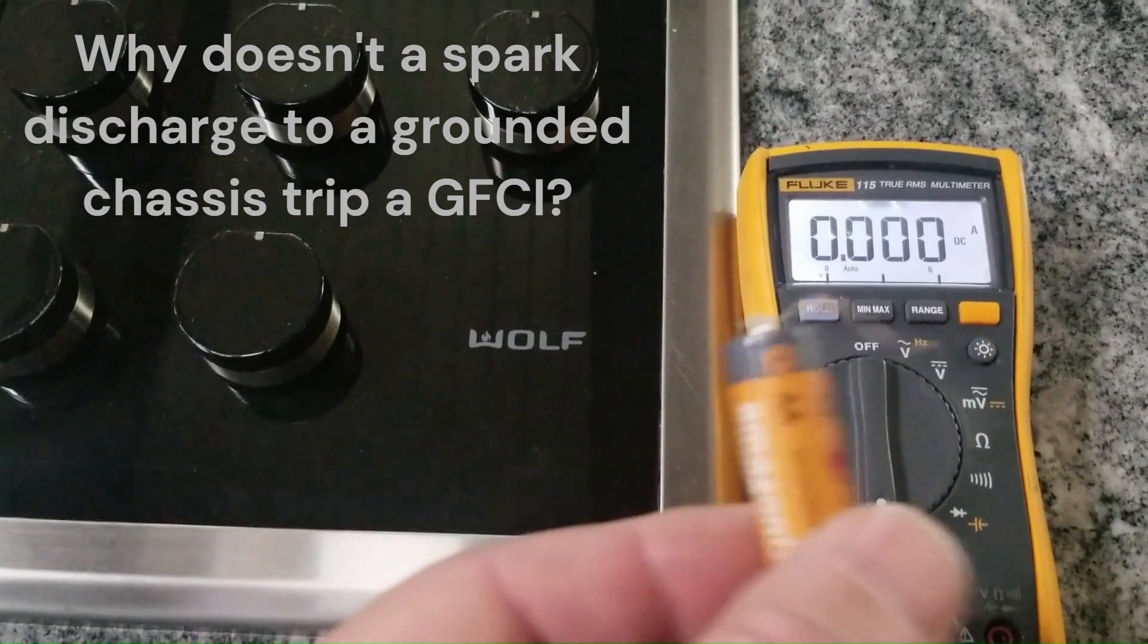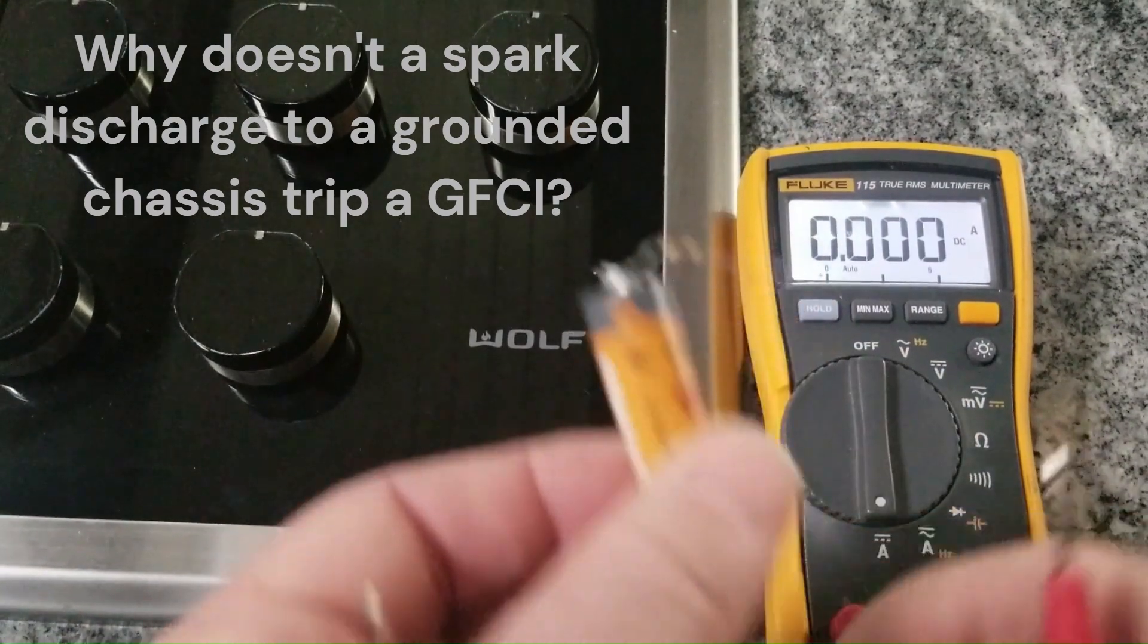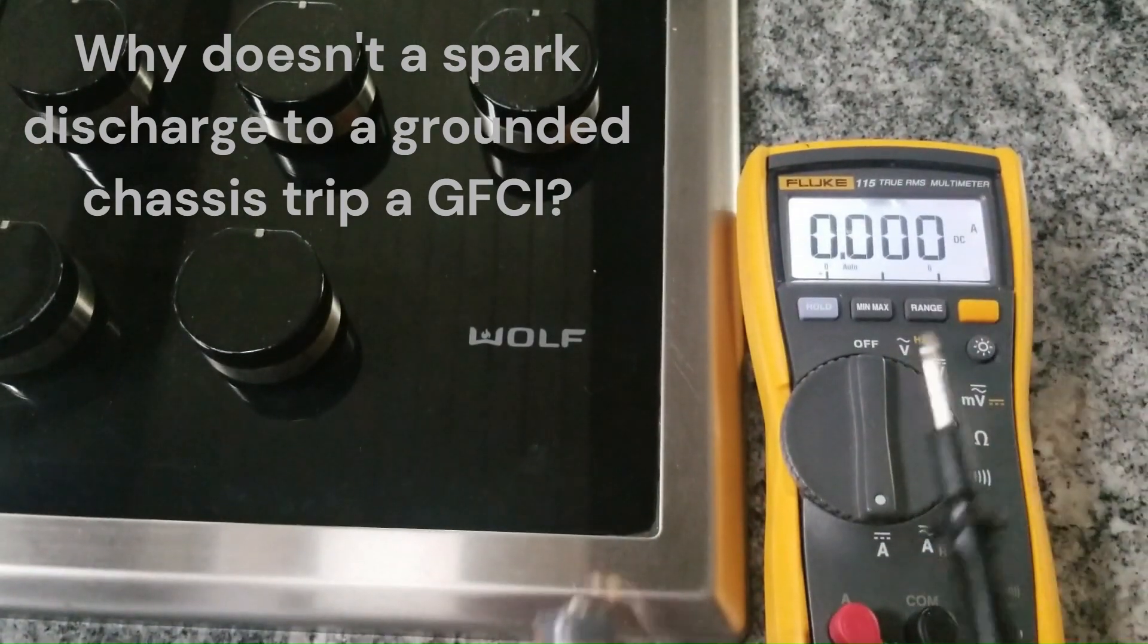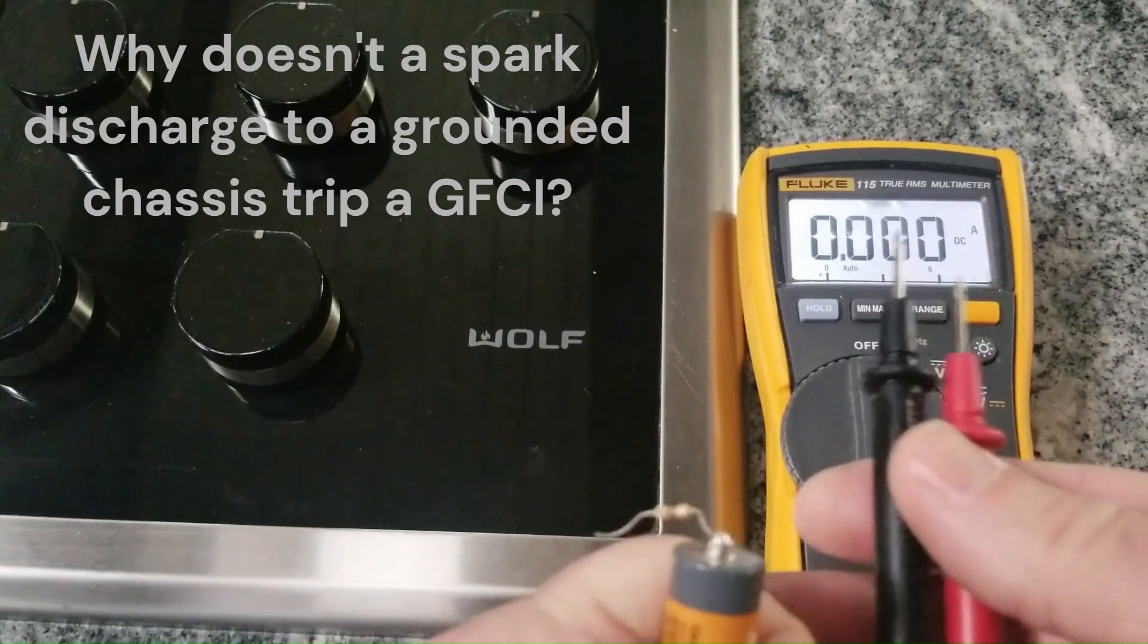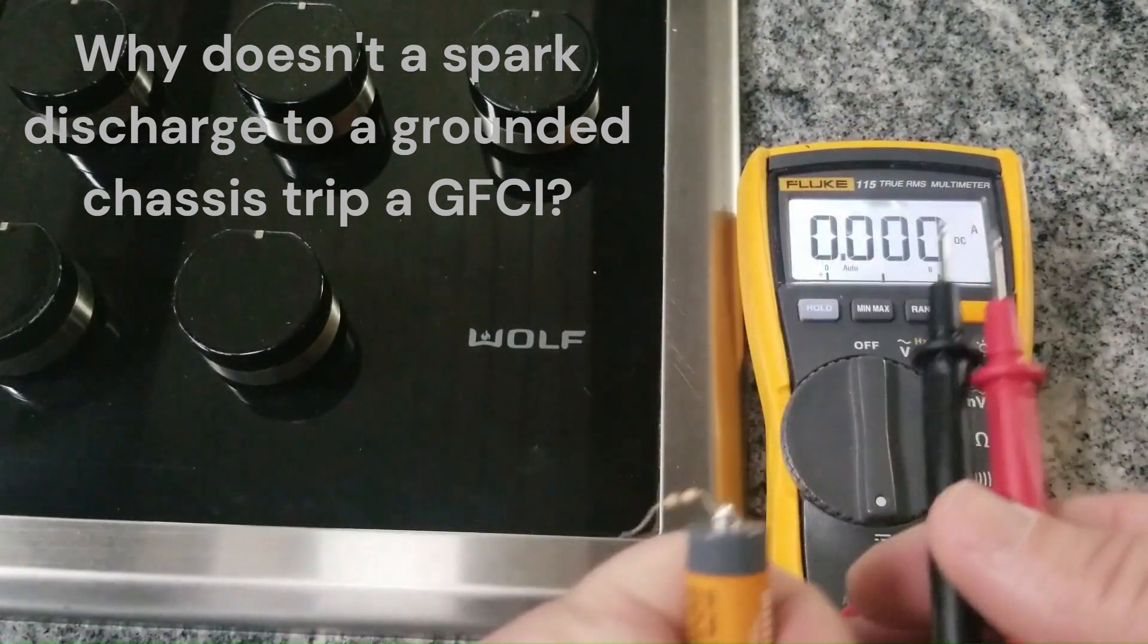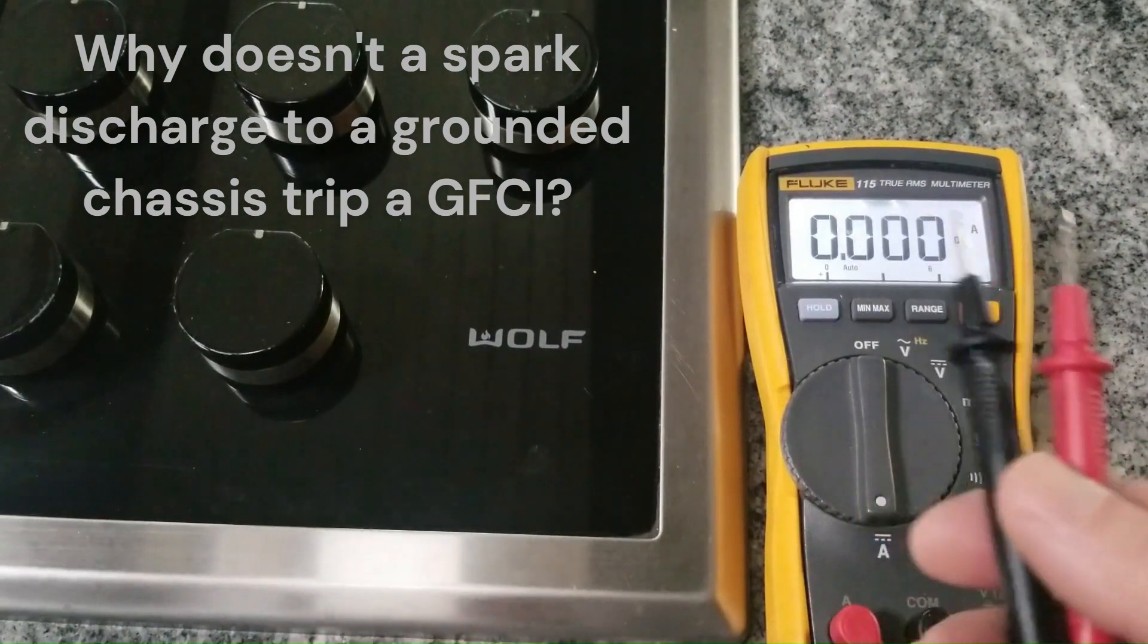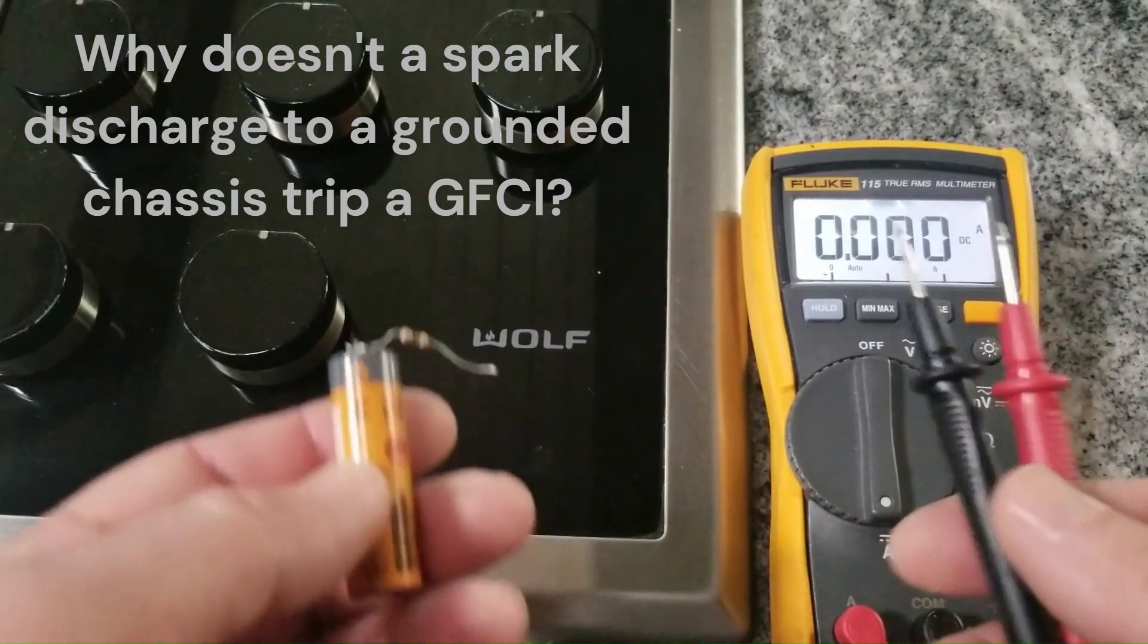Here we have a AA battery with a 47 ohm resistor soldered to the top of it. This meter is set on DC current for this demonstration, and traditionally current is measured in line where the meter is actually in line with the circuit, and that's what this Fluke 115 is able to do.